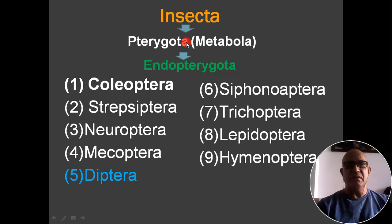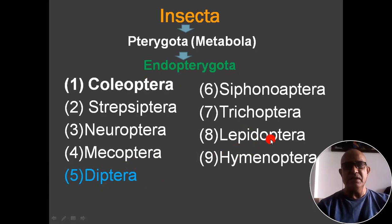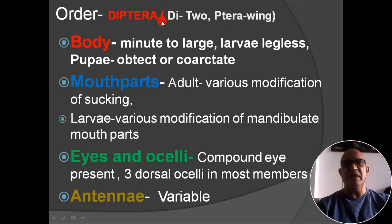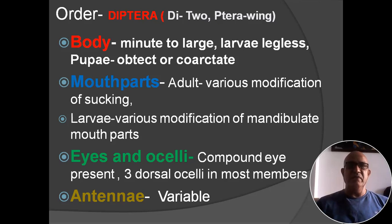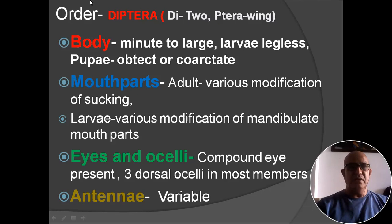In Class Insecta, the group Pterygota is also known as Metabola. Under Endopterygota, the fifth order is Diptera. In insects generally there are two pairs of wings, but in Diptera, the mesothorax wings are highly developed while the metathorax wings become vestigial, converting into filament-like structures called halteres, which function as balancing organs. Therefore, there are only 2 functional wings, hence this order is called Diptera.